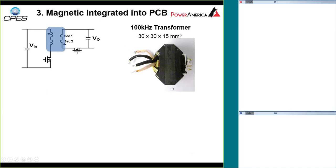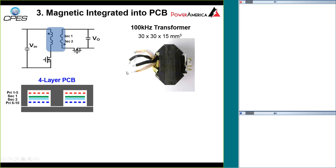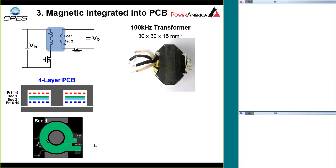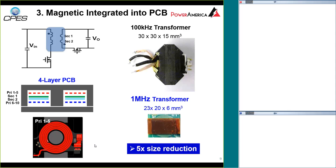Number three: the transformer usually has a hand-wound core and winding — a very labor-intensive process. We replace that with a PCB-based winding design. In this particular one we have a 10-turn primary and 2-turn secondary. We use a four-layer PCB — a commonly low-cost PCB design — with secondary winding, primary winding, and secondary winding in a four-layer structure. The core is just sandwiched to the PCB board. By running at 10 times higher switching frequency, we can reduce the transformer size by a factor of five.